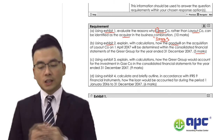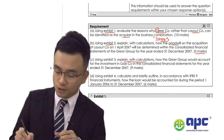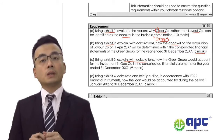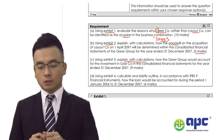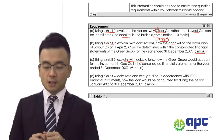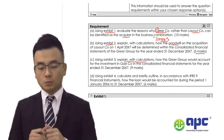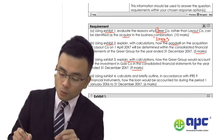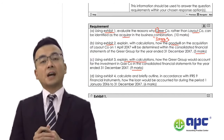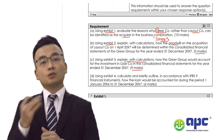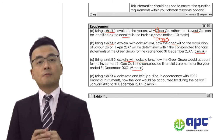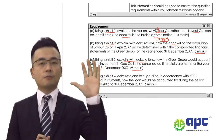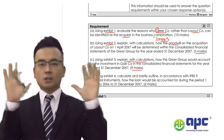Moving on to Part C, using the exhibit to explain with calculations — the paper always emphasises that the main focus is explanation rather than simply calculations. This requirement covers how G-Complete will account for the investment in another company called G in the Consolidated Financial Statements. We are given nine marks. Exhibit 3 covers the journey from a trade investment in Fair Value through OCI to investment in Associates.